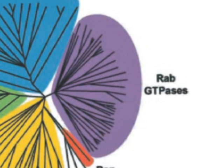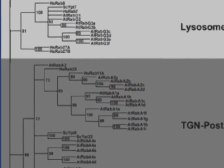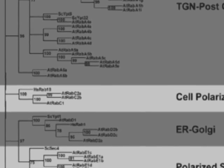RAB proteins are found in both animals and plants. Plants have a large number of RAB isoforms. For example, there are 57 RAB GTPase isoforms in the Arabidopsis genome.